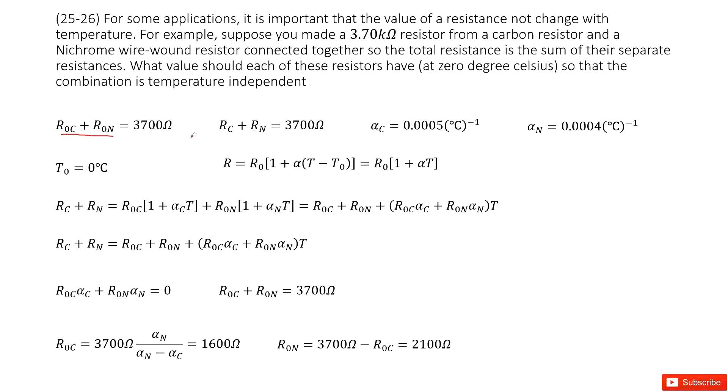This is initial. And finally, we want to make sure the resistance of carbon plus the resistance of nickel still equals 3700 ohms. This is what we want to make sure works, and it asks you what value should each resistance have. So what value is R0C and R0N?